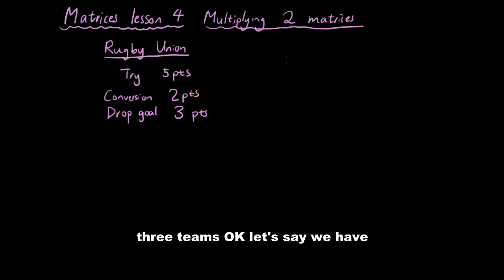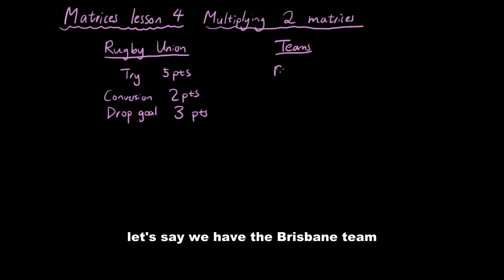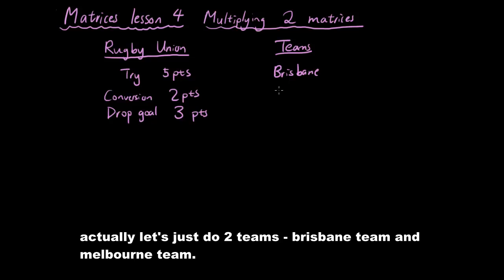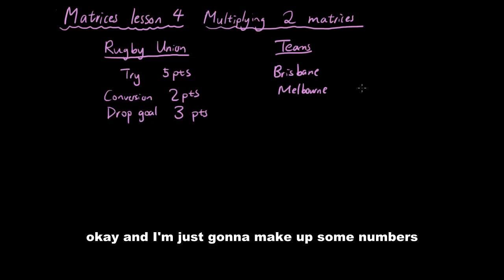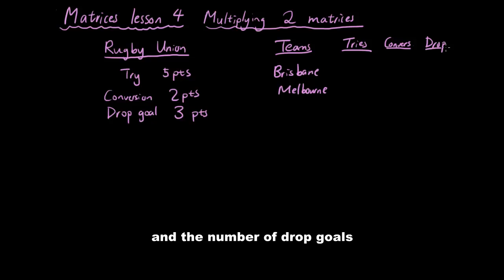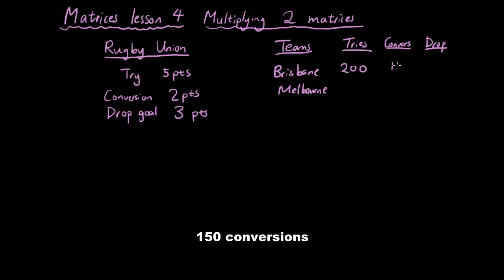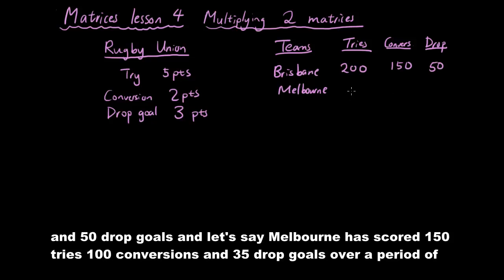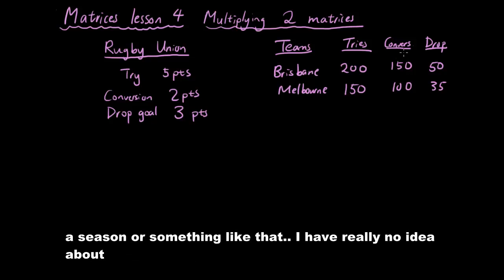Now let's say we have two teams — Brisbane and Melbourne. I'm just going to make up some numbers: the number of tries each team scores, the number of conversions, and the number of drop goals. Let's say Brisbane has scored 200 tries, 150 conversions, and 50 drop goals. And Melbourne has scored 150 tries, 100 conversions, and 35 drop goals over the period of a season.